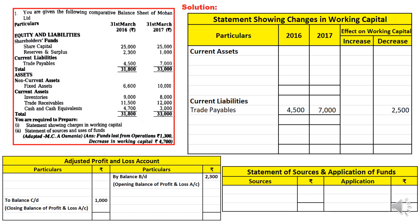How to prepare the statement showing changes in working capital is covered in the separate video — fund flow statement video one — link shared in the i-button and description box. Moving to assets: fixed assets were 6,600 last year, now 10,000 — an increase of 3,400. This incremental change is considered a purchase of fixed assets. Since we are spending money on purchase, it is an application of funds — 3,400 written as purchase of fixed assets on the application side.